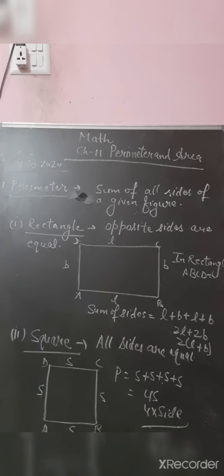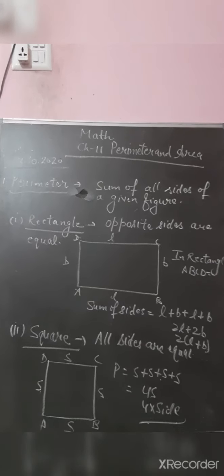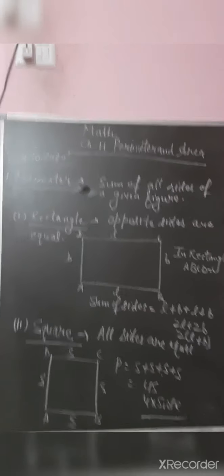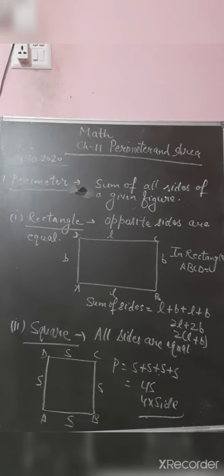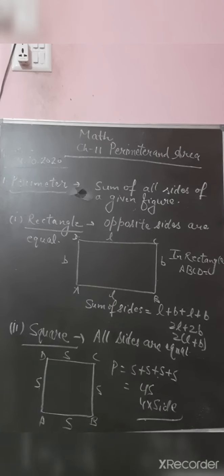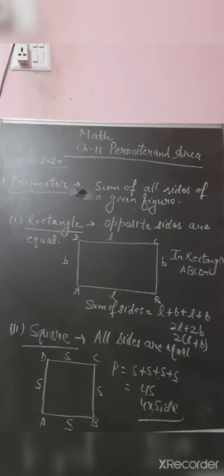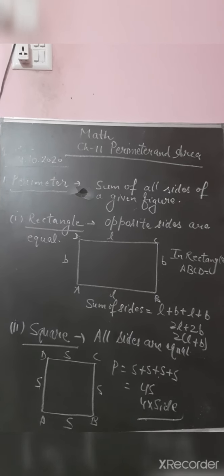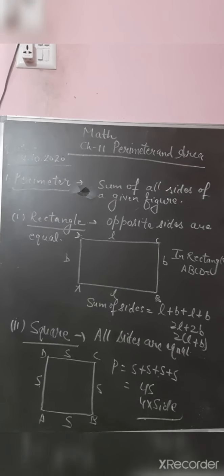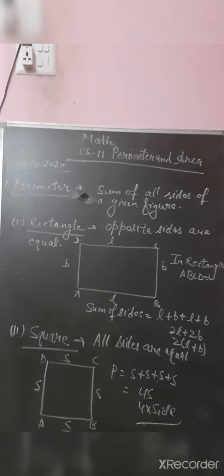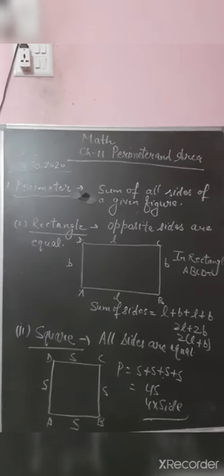Dear students, as per schedule your maths class is there. In the last class we covered Chapter 9, which was decimals, and I have also taken a test of that chapter. Chapter 10 we will be doing next month. Now we will be starting Chapter 11, that is perimeter and area.